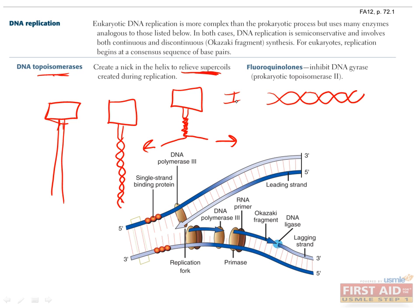Topoisomerase type 1 is used to reduce supercoiling, and it does this by cutting one strand, which allows the other one to pass through the hole, and then it re-anneals the cut strand. This process does not require ATP, and this uncoiling of DNA is necessary in order to replicate it.